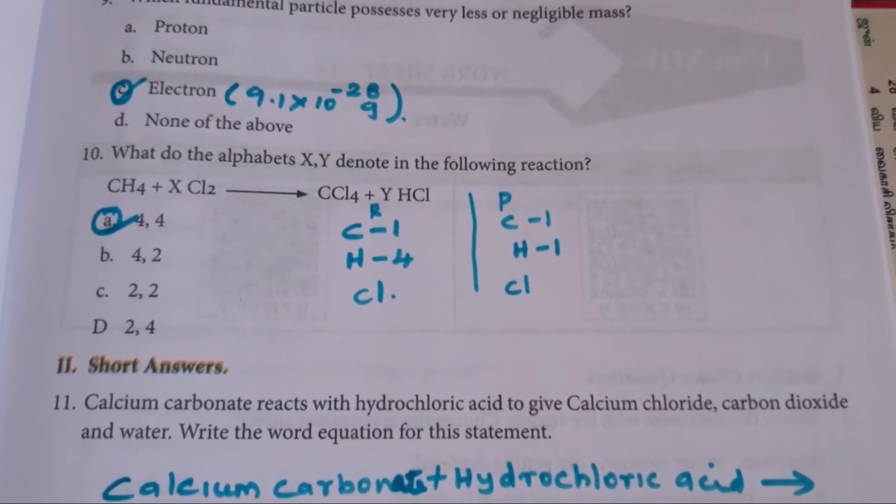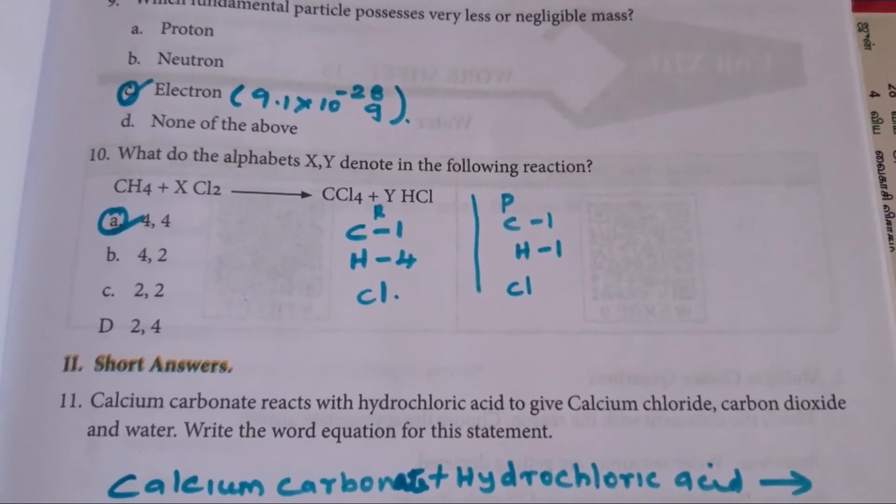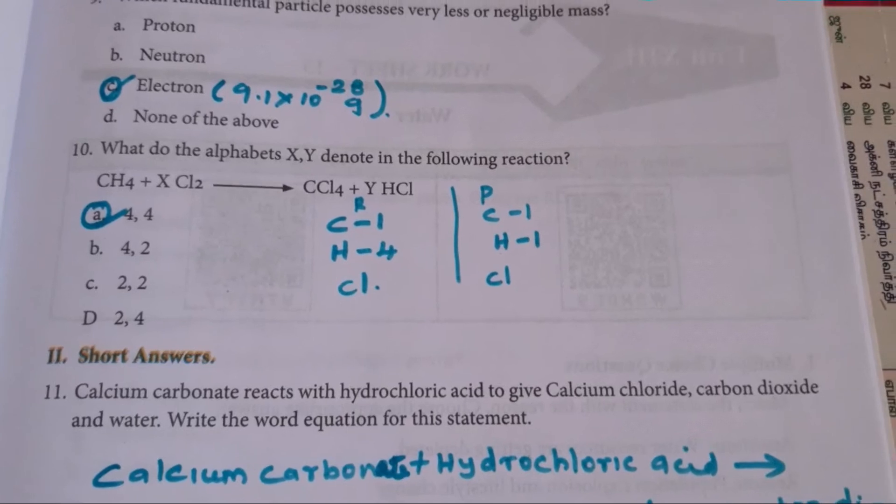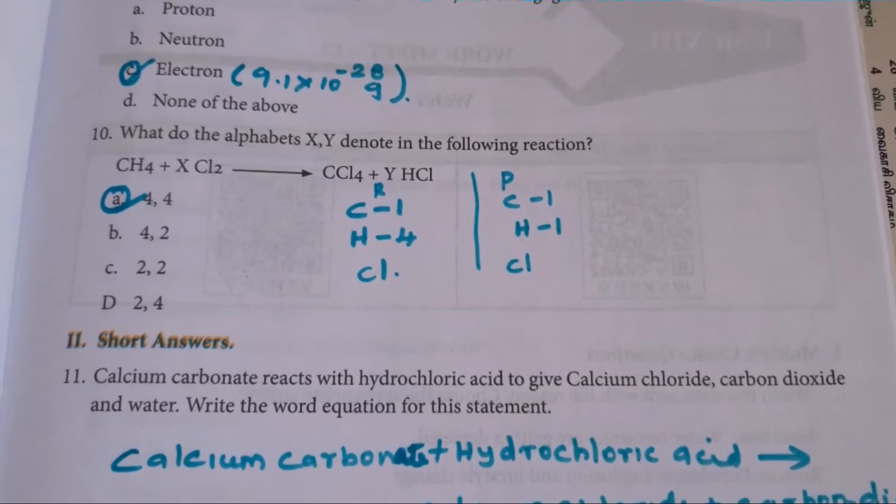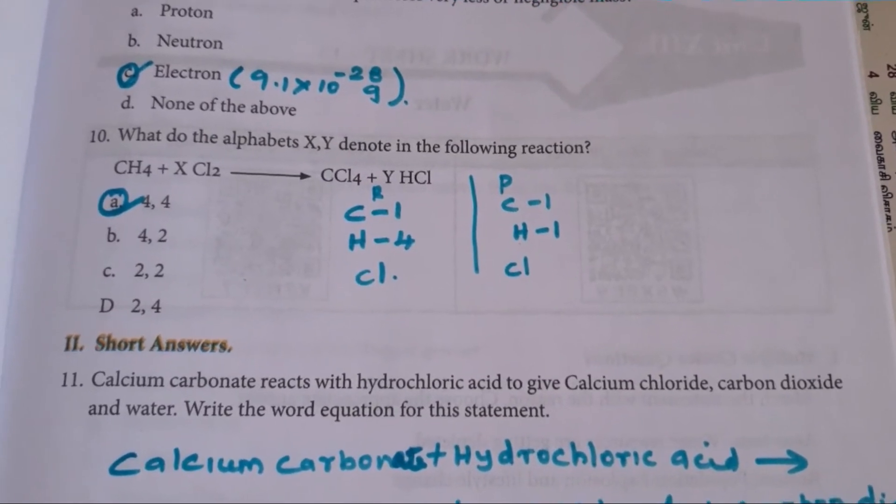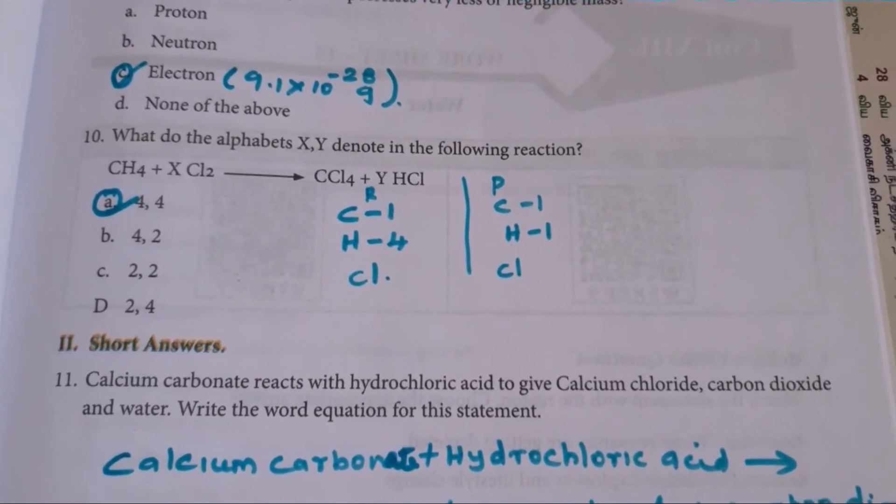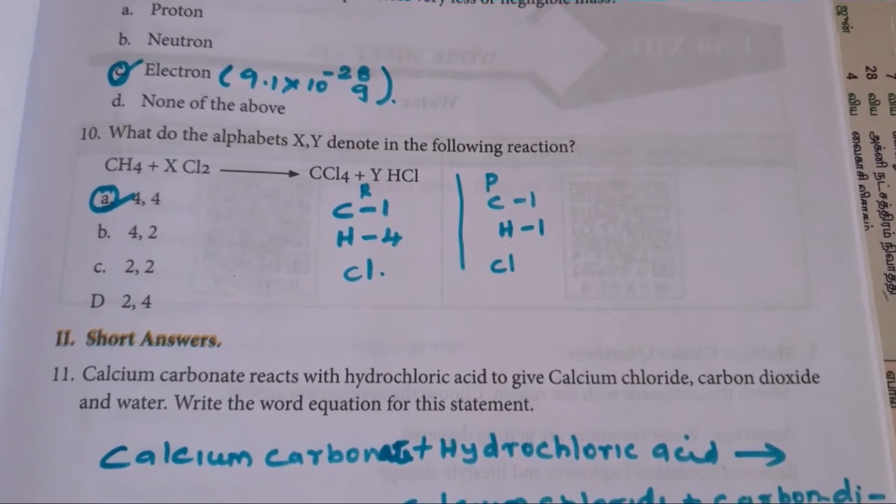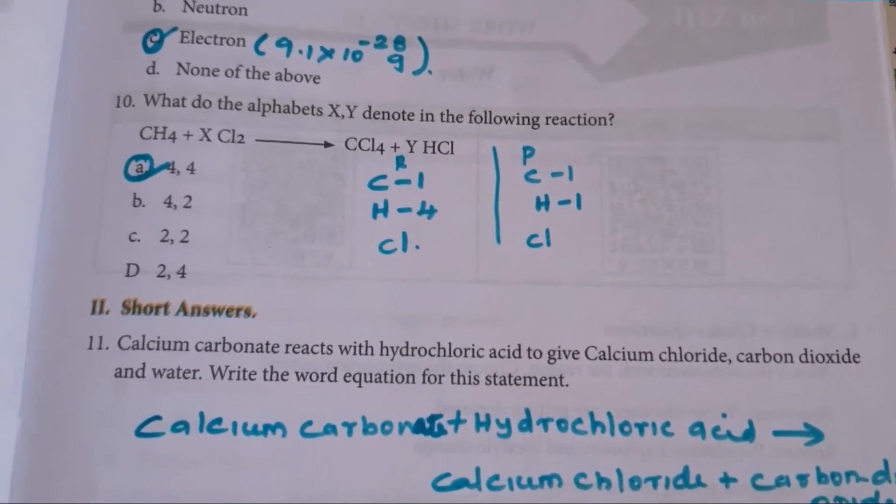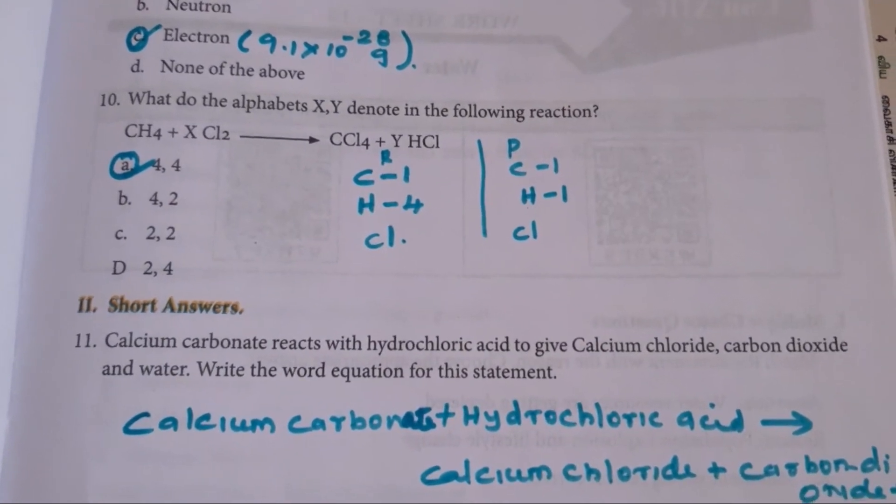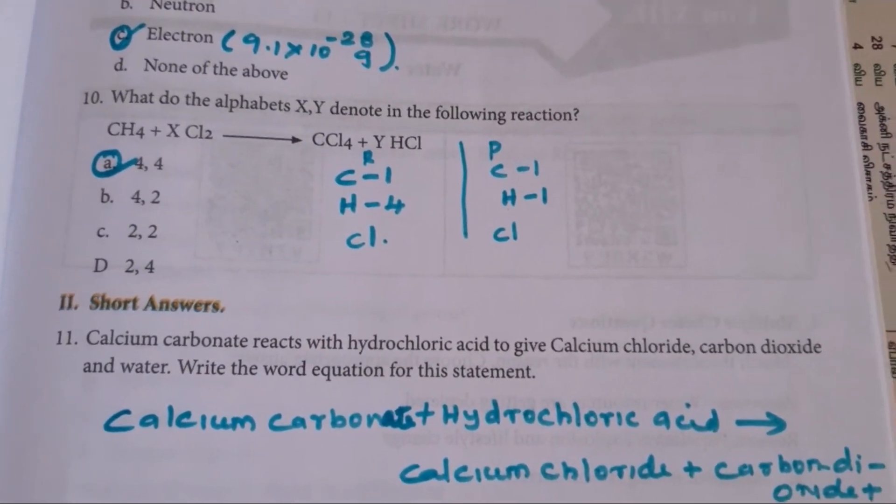Then, tenth one. What do the alphabets XY denote in the following reaction? So methane CH4 plus chlorine Cl2 gives CCl4, carbon tetrachloride plus hydrochloric acid. So here, it is nothing but that XY is just a number. So here, we want to complete or balance the equation.